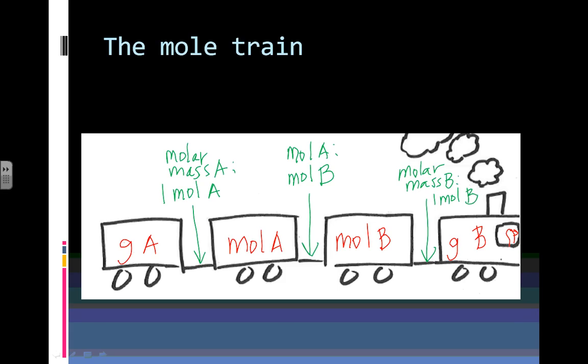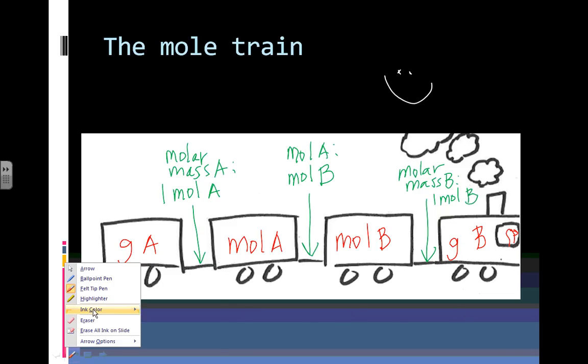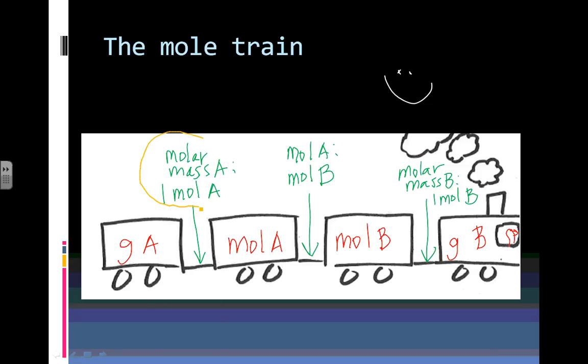Now you can fill in the mole train that you've been given. I know you love my incredibly artistic work and also my amazing penmanship. Here we're going to go from grams of A to moles of A, moles of B to grams of B. And I know that doesn't make any sense to you right now, but it will in just a minute. And in order to get from place to place, we're going to have to go through these ratios.